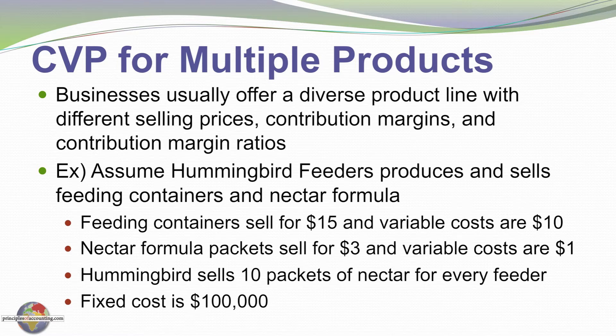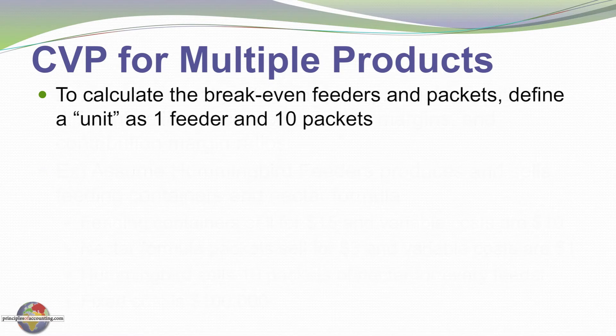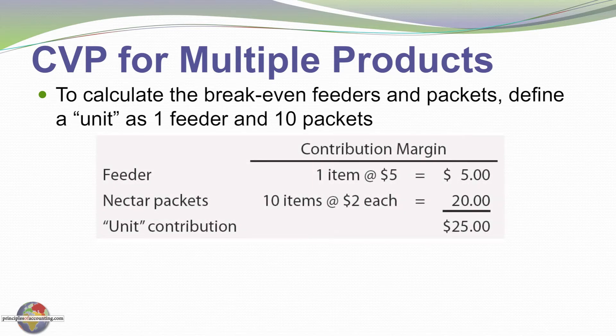If fixed cost for Hummingbird Feeders is $100,000, the question is: what is the break-even point? To determine the break-even point we need to determine the product mix — that is, how many feeders we sell relative to the nectar packets. Analysis has determined that for every feeder sold there are 10 nectar packets sold, so we define a unit as 10 nectar packets and one feeder. When we sell a unit, the contribution margin is $5 for the feeder and $20 for the nectar packets (that is $2 times 10 packets).